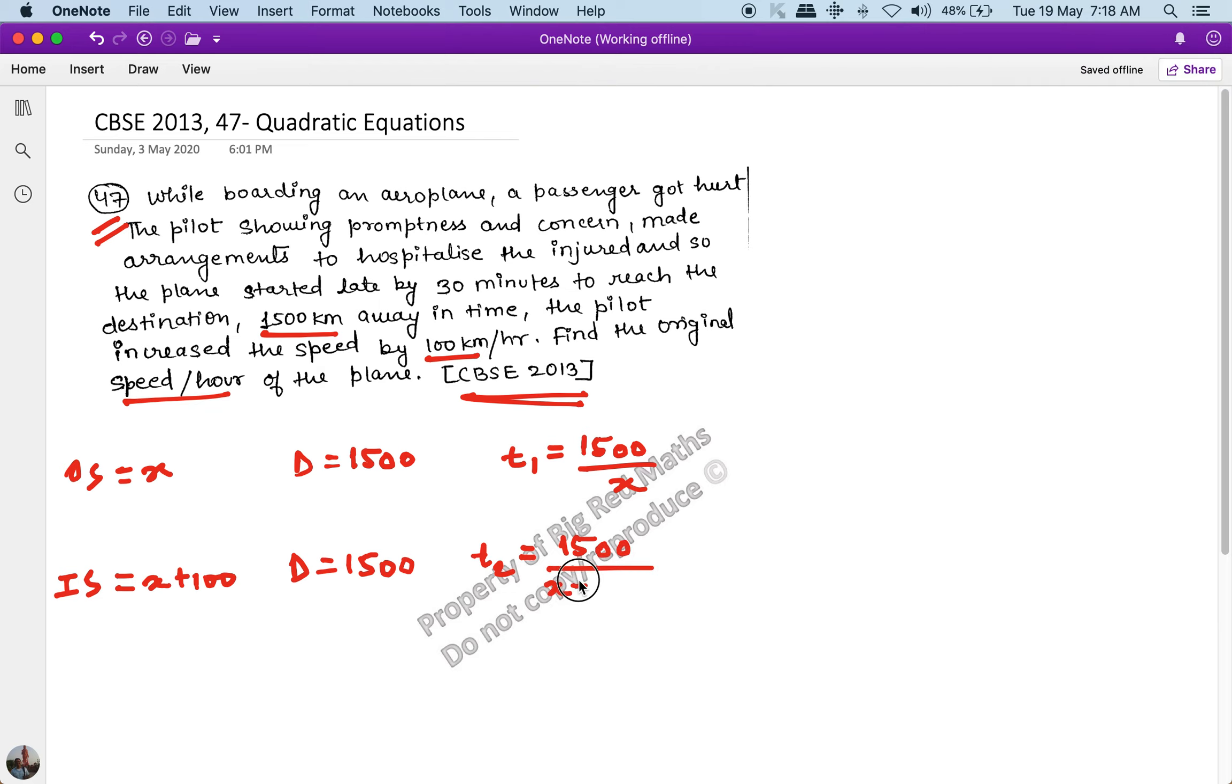And the time taken in scenario two, T2, is 1500 upon x plus 100. Now one important thing to note here is that you have to understand the two conditions really well. The question says that he covered the distance of 1500 kilometers in both the cases.